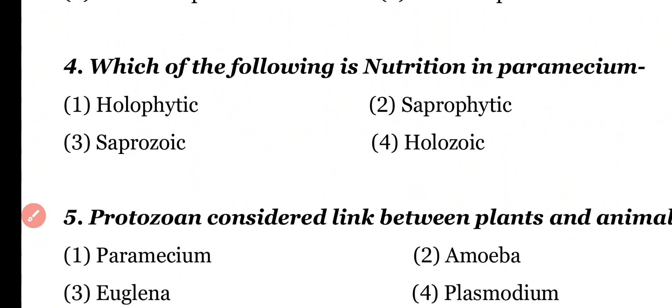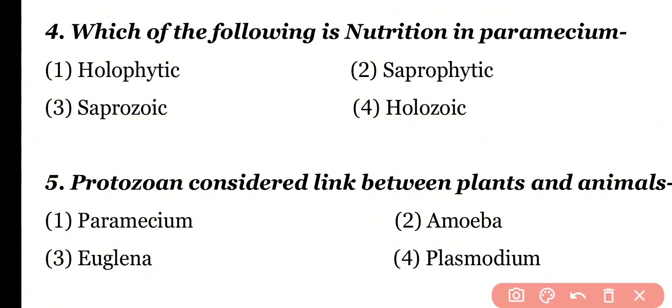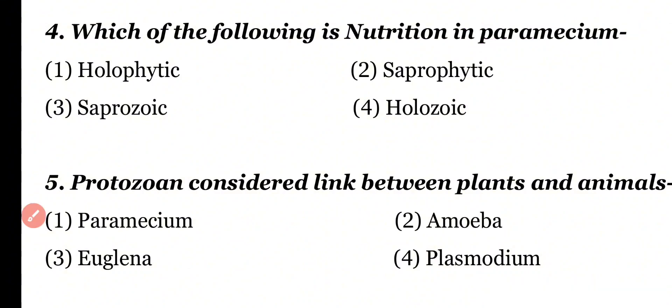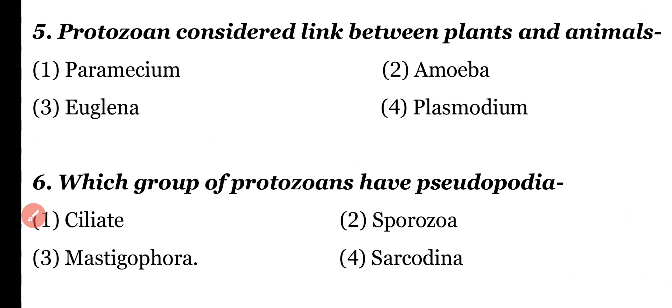Question number 4: Which of the following is the type of nutrition present in Paramecium? Holophytic, saprophytic, saprozoic, or holozoic? Correct answer is option 4. Holozoic type of nutrition is present in Paramecium.